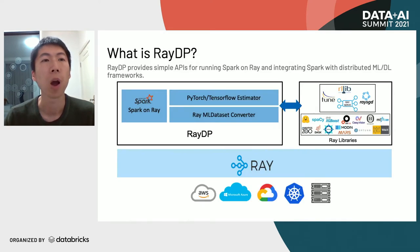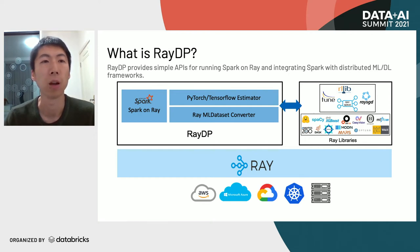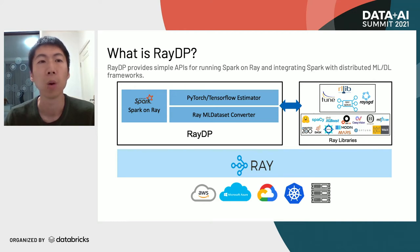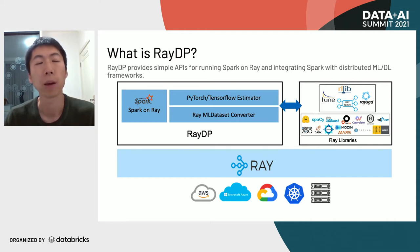There are a few options on Ray to do data preprocessing. For example, Modin provides a pandas-like API on Ray. However, there are many use cases using Spark as a major data processing framework in their machine learning pipeline. So we created RayDP to provide simple APIs for running Spark on Ray and integrating Spark with distributed machine learning and deep learning frameworks. When we run Spark on Ray, we treat Ray as a resource manager and run Spark executors in the Ray Java actor, making Spark a native library on Ray.